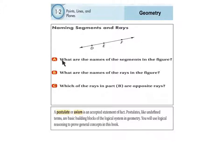Let's look at the first example. It says: what are the names of the segments in the figure? We're looking at this picture right here, and I need to name as many possible segments as I can — at least five of them. Remember, a segment has a starting point and an ending point, and it's only everything in the middle.